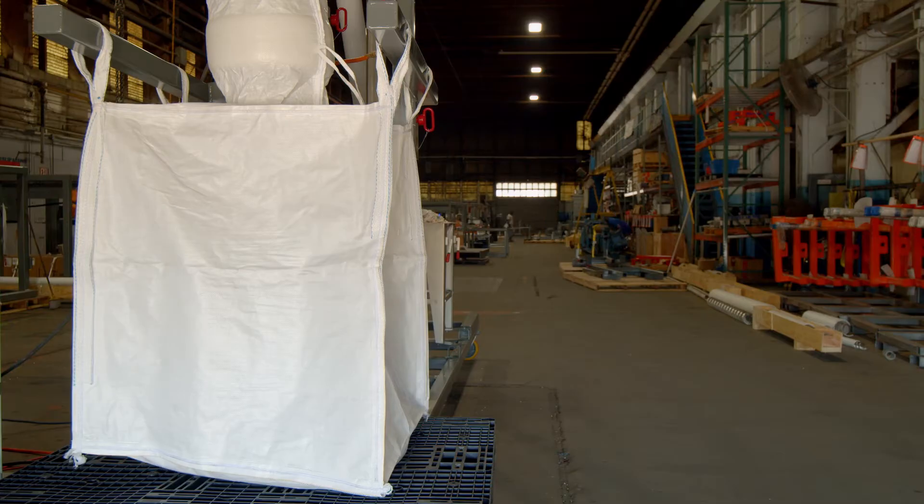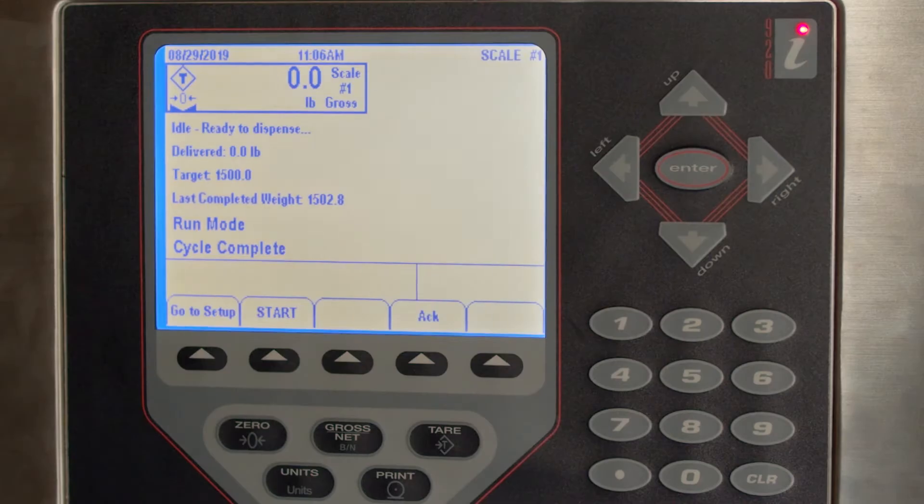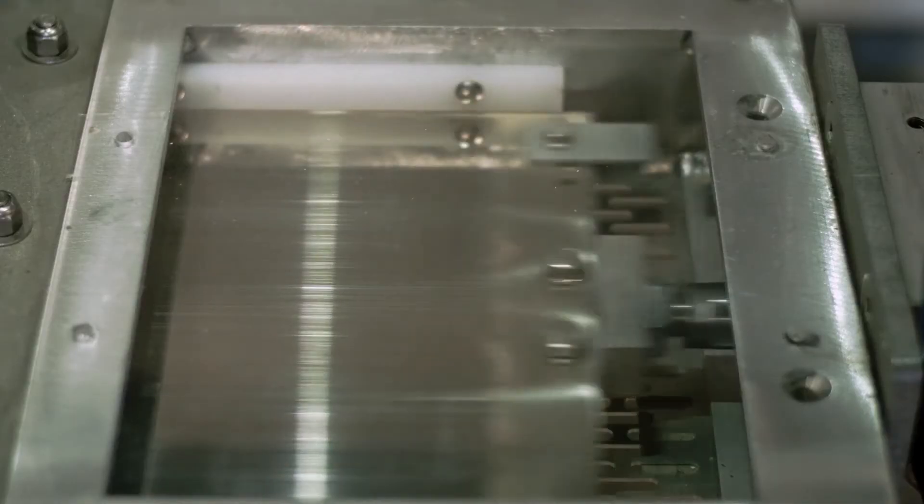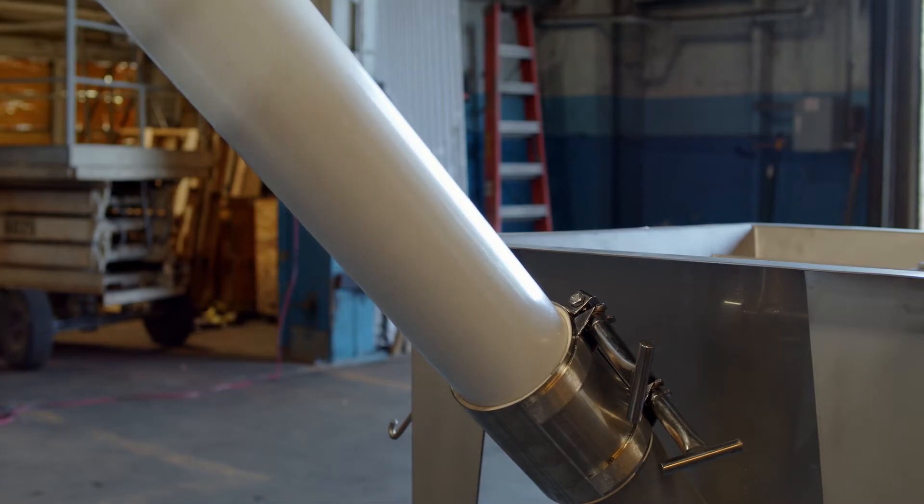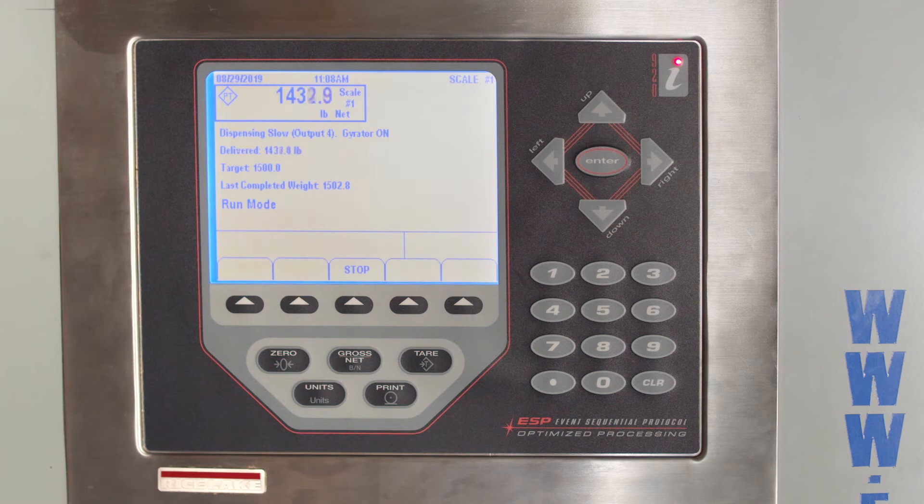The system is a gain in weight, gross weight system. The scale tares to zero, then a signal opens a valve or starts a conveyor in bulk mode. Once a preset weight is achieved that is near the target weight,